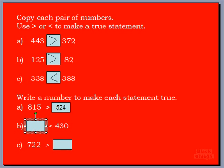Now this number in the box has to be less than 430. What number could we put in there that's less than 430? I'm going to say 334. Do you agree? 334 is less than 430 — absolutely! Our one number has three hundreds and the other number has four hundreds, so 334 is less than 430.